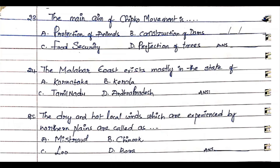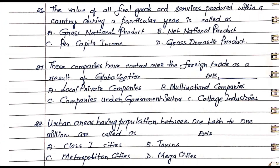Question 25: The dry and hot local winds experienced by northern plains are called. Option A. Mistral, Option B. Chinook, Option C. Loo, Option D. Bora. The answer is Option C. Loo.